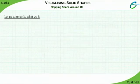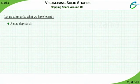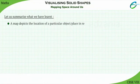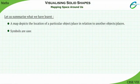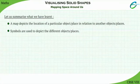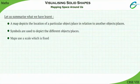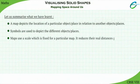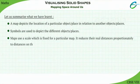Let us summarize what we have learned. A map depicts the location of a particular object or place in relation to another object or place. Symbols are used to depict the different objects or places. Maps use a scale which is fixed for a particular map. It reduces real distances proportionately to distances on the paper.